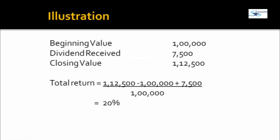Let's do an illustration. Say the beginning value of security A is Rs.1,00,000. During the year, you received a dividend of Rs.7,500 and the closing value of the security is Rs.1,12,500. The total return would be Rs.1,12,500 minus Rs.1,00,000, which is Rs.12,500 appreciation, plus Rs.7,500 dividend, divided by Rs.1,00,000. This is similar to how we compute the cost of debt — the denominator is the funds invested. The total return comes to 20%.